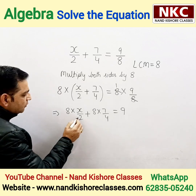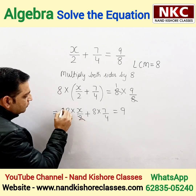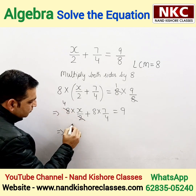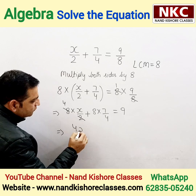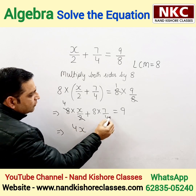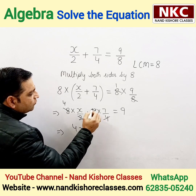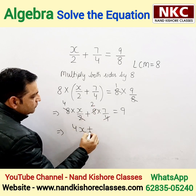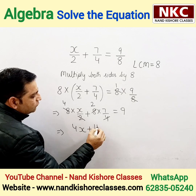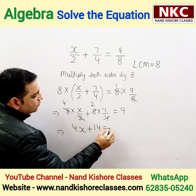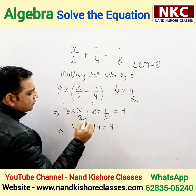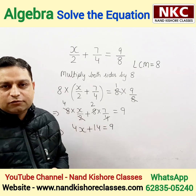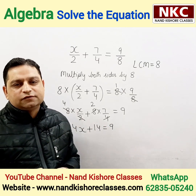What happens now? 8 divided by 2 gives 4, so it becomes 4X. In the table of 4, 8 also cancels, giving 7 multiplied by 2 which is 14. So we get: 4X plus 14 equals 9. We get a very simple equation after doing this step.